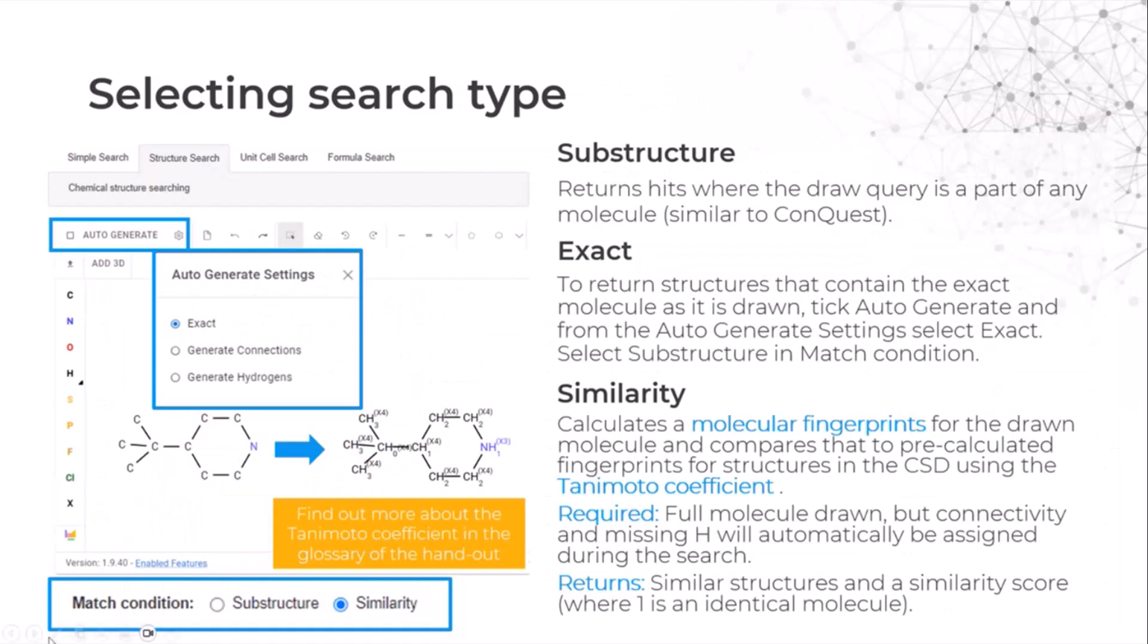We also mentioned that there are different search types. We have the substructure search which returns hits where the drawn query is part of any molecule, and this works similar to Conquest if you're familiar with it. If you want an exact search to return structures that contain the exact molecule as it is drawn, then you need to tick the auto-generate option and in the settings select exact and then run your search.